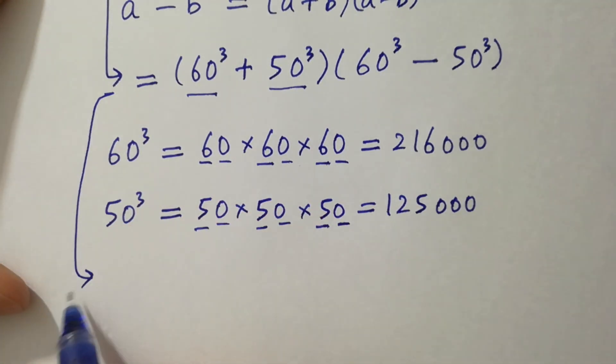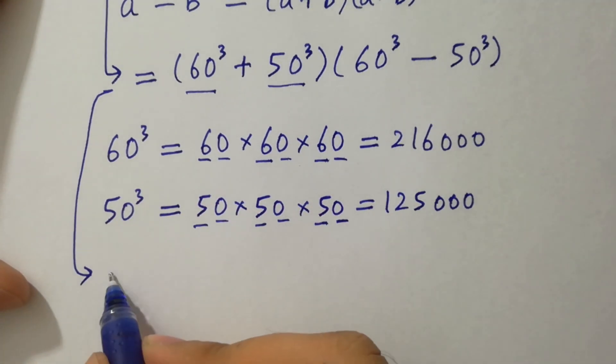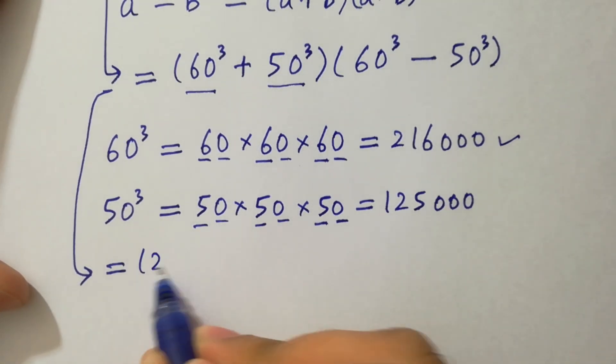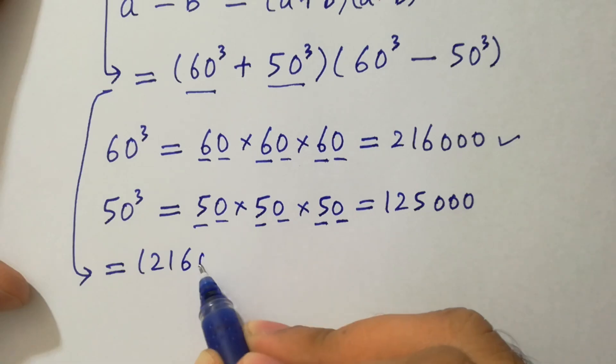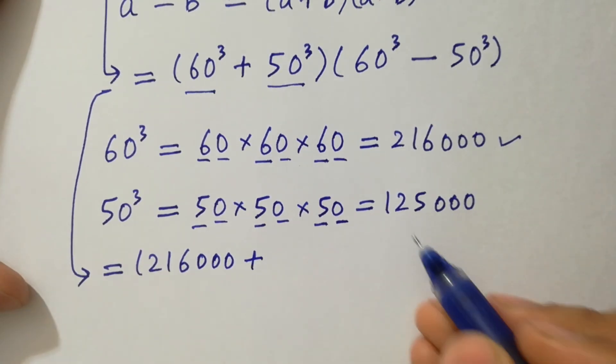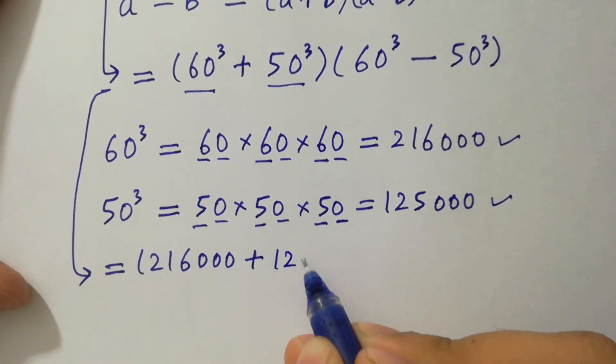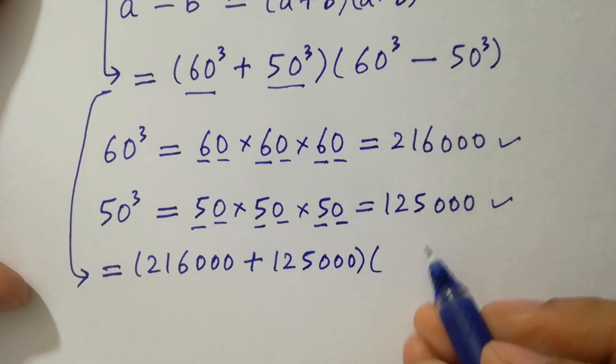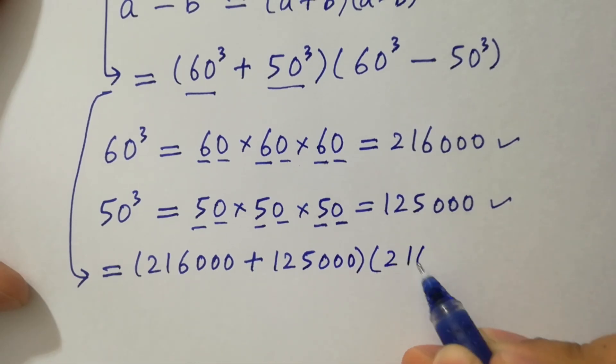We can write it as 60 cube is 216,000 plus 50 cube is 125,000, again 216,000 minus 125,000.